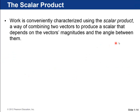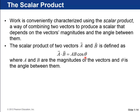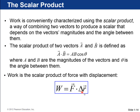Work can be characterized using the scalar product. The scalar product of two vectors A and B is defined as their magnitudes multiplied — A times B — times cosine θ, where θ is the angle between the two vectors. Work is the scalar product of the force and displacement vectors: W = |F| |Δr| cos θ, the angle between F and Δr.